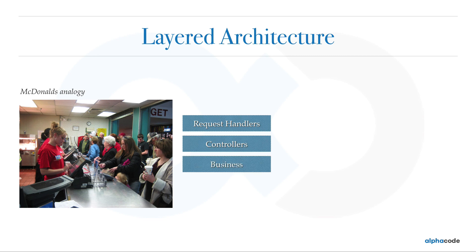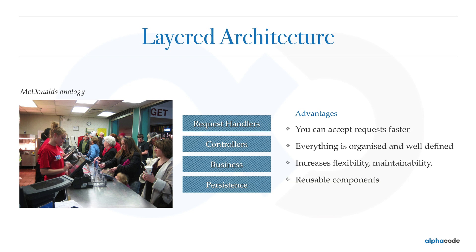Next is your business layer — it can be anything you are assisting. Your cooks represent the business layer, cooking things for you. The next layer is your persistence layer — the layer from which all your raw materials come. The cooks get all the raw materials from the persistence layer. This is basically a layered architecture, and we have the same architecture in software. The advantages of a layered architecture are that you can accept requests faster, everything is organized and well defined, it increases flexibility and maintainability, and it makes your components reusable.